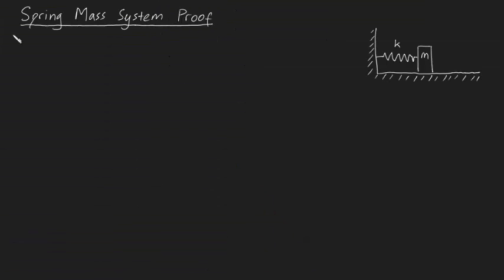G'day guys. In this video I'm going to formally derive for you the equation of motion for a spring-mass system. To do this, let's consider that we have a mass connected to a spring. The way we find the equation of motion is we consider what this mass looks like at some arbitrary time t during its oscillation.